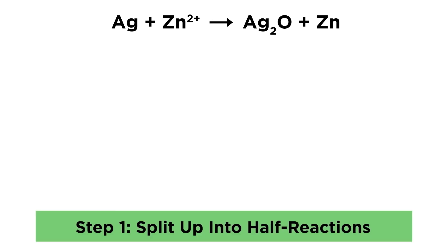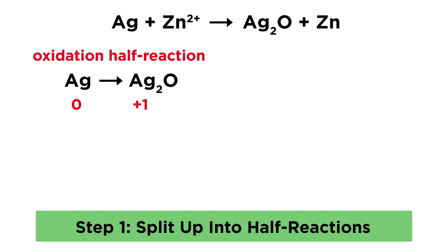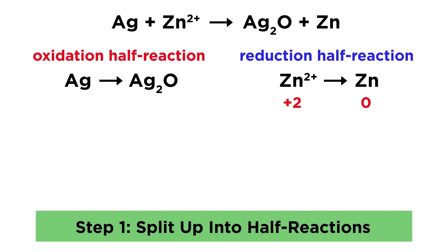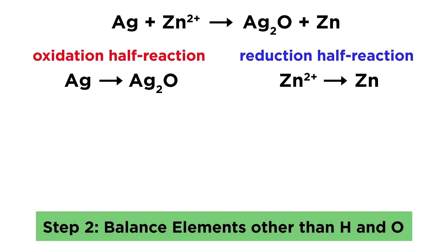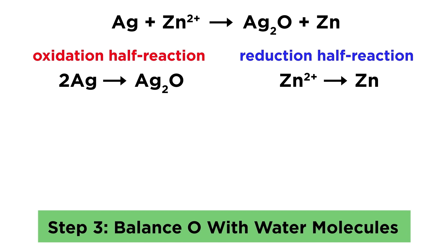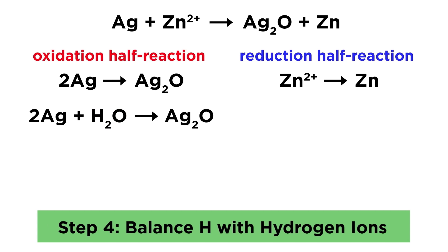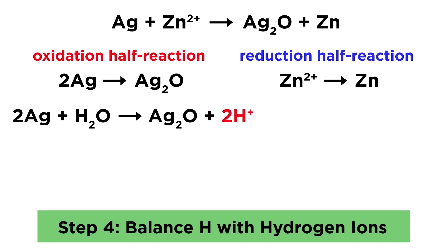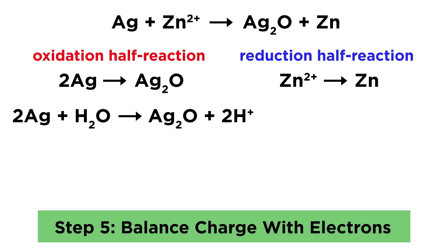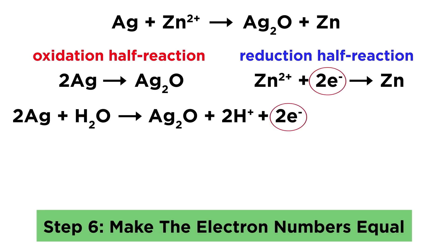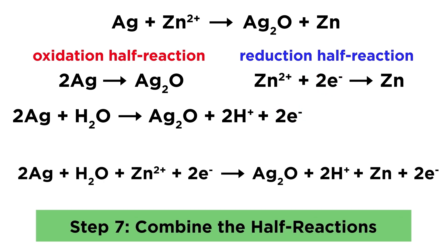Again, we will start by separating this into half-reactions. Silver has been oxidized, going from 0 to plus 1, and zinc has been reduced, going from plus 2 to 0. Then just as before, we balance elements other than hydrogen and oxygen — that will involve placing a 2 before solid silver. Next, we balance oxygen with water molecules, that means 1 on the left. Then we balance hydrogens with protons, which means 2 on the right. Then we balance charge by including electrons — that means 2 on the right for this one and 2 on the left for this one. Because the number of electrons in each half-reaction is equal, we can go ahead and combine them, cancel out the electrons, and we get this.